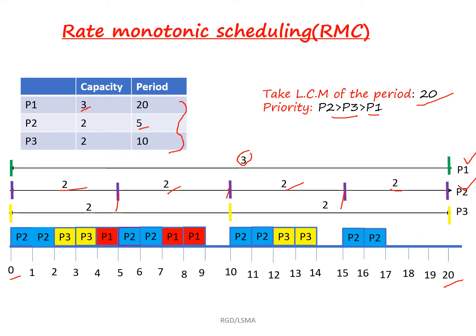For the P3 process, it has to execute two times for every 10-interval time period. So it has to execute two units from 0 to 10, then from 10 to 20, it has to execute two times again. You can make a line like this for each and every process. After that, we can move on to the Gantt chart.